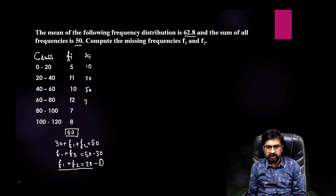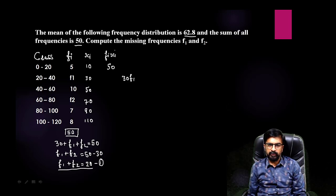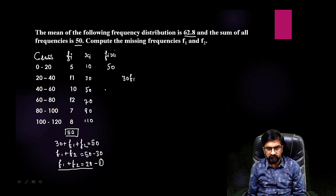And now directly sum of fi and xi. That is 5 times 10 is 50. Now f1 into 30, I am going to write inside. Why I am writing it here? Because sometimes what students do, students add this. We cannot add this because these are unlike terms.